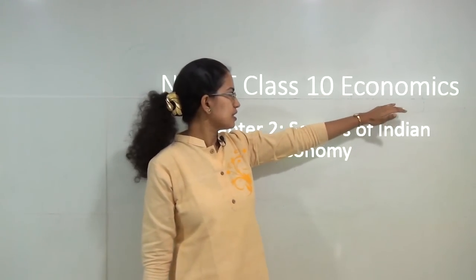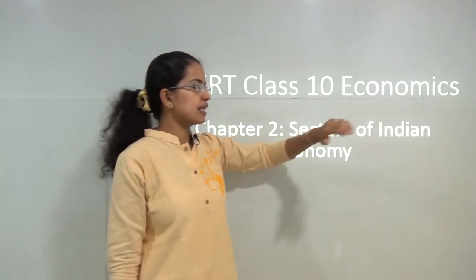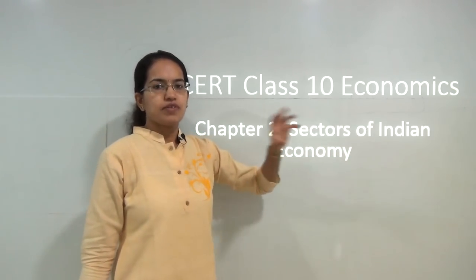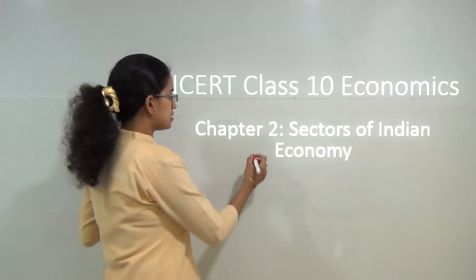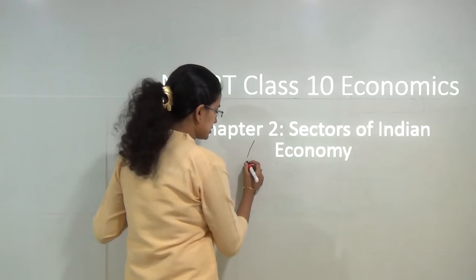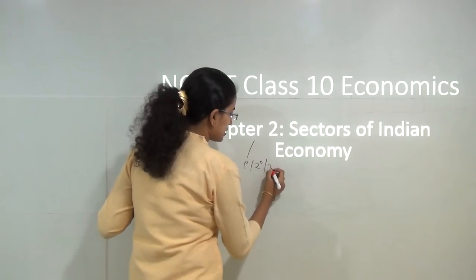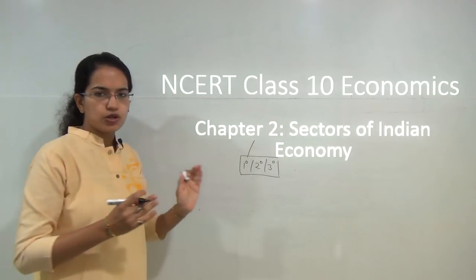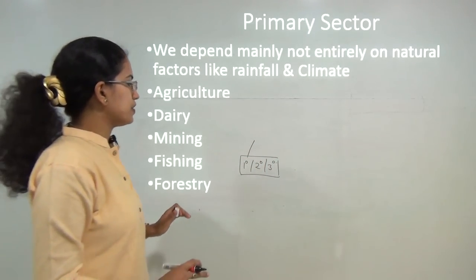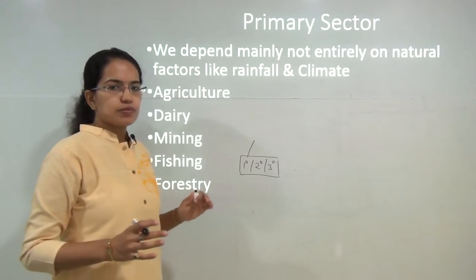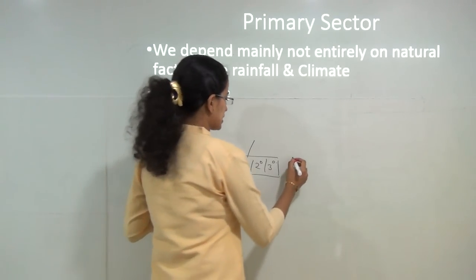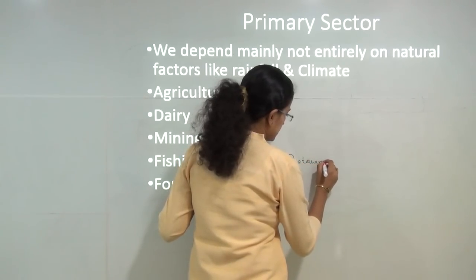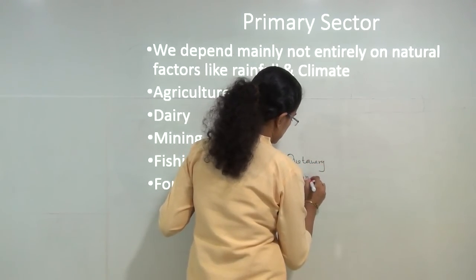We will be discussing the NCRT Class 10 Economics Chapter 2, that is Sectors of Economy. When we classify the sectors, we predominantly say there are 3 sectors: the primary, secondary, and the tertiary sector, as per the NCRT textbooks. However, under this session we would also be discussing 2 more important sectors of recent use — those are the quaternary sector and the quinary sector.